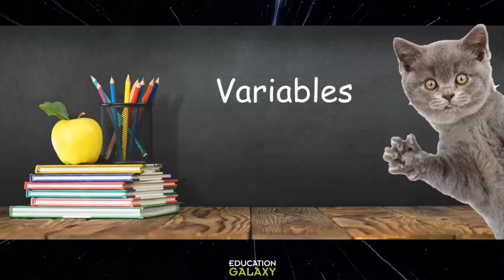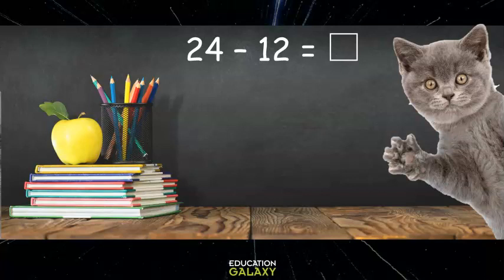Wait a minute. What is a variable? Well, remember the old days way back when you were younger and the teacher gave you something that looked like this? 24 minus 12 equals box. And she said, okay sweetie, what number goes in the box?